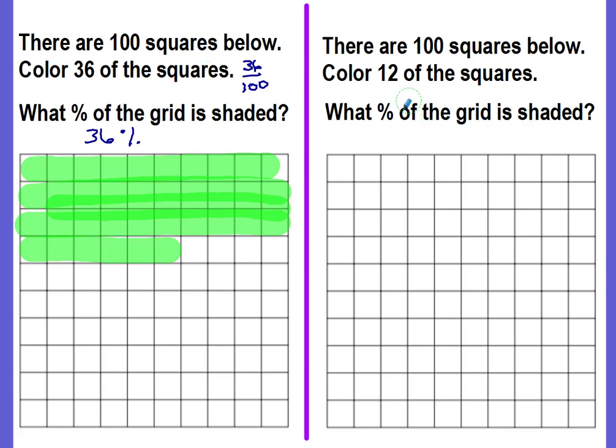In our next example, again, there are 100 squares. It's a 10 by 10 grid. We want to color 12 of the squares. So this is going to be 10 squares and two more makes 12. What percent is this? Well, I've just colored 12 out of the 100 squares. Is this per 100? It is per 100. So my 12, the amount that I've shaded, becomes my percent.